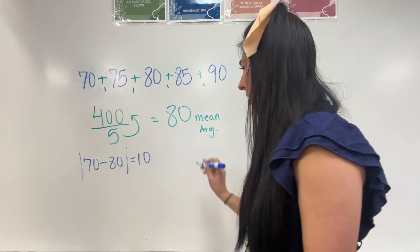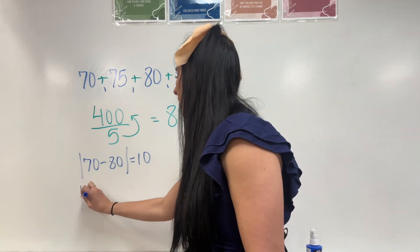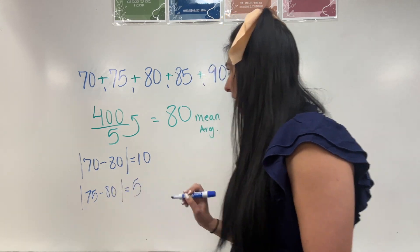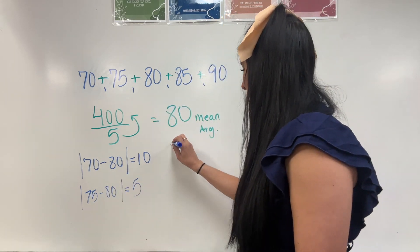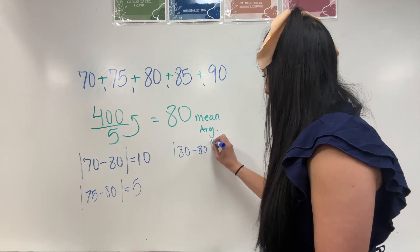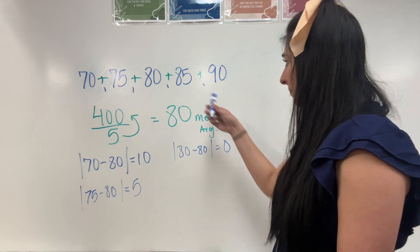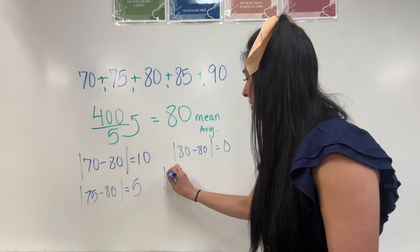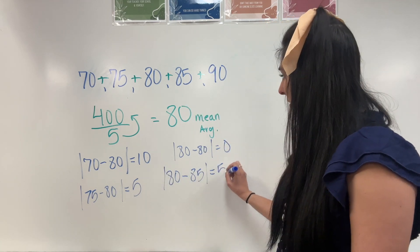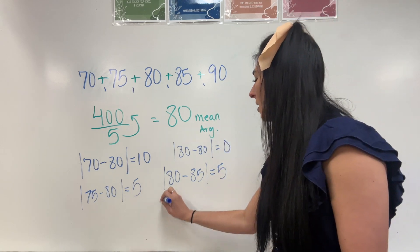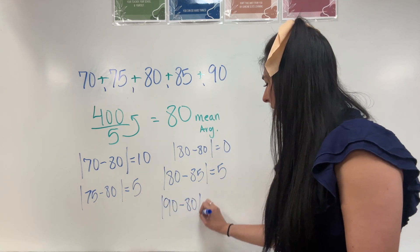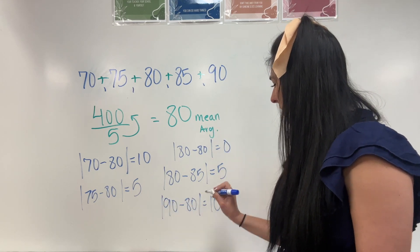Let's do the next data point. Absolute value of 75 take away 80 is going to equal 5. Let's do 80: absolute value of 80 take away 80 equals 0. Then absolute value of 85 take away 80 is going to give me 5, and absolute value of 90 take away 80 is going to equal 10.